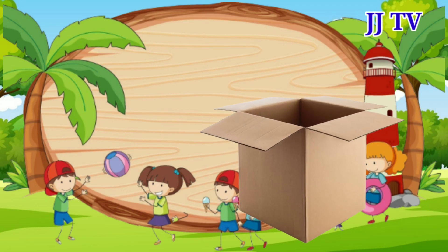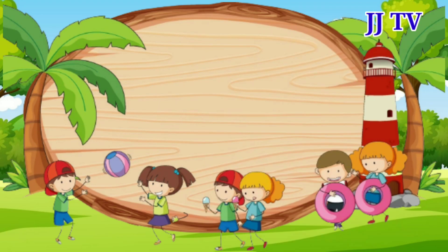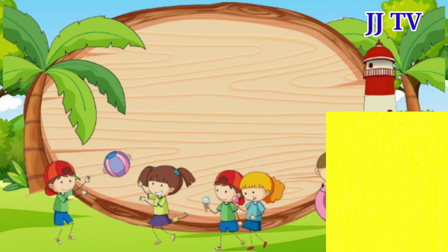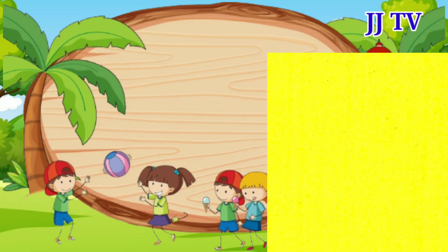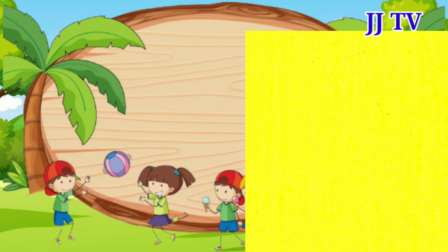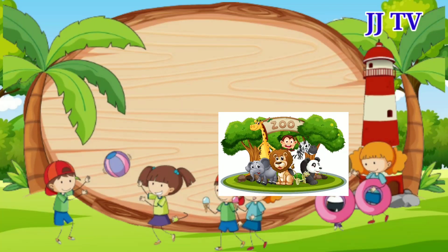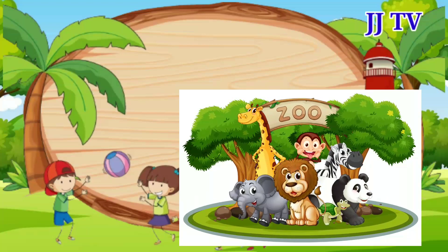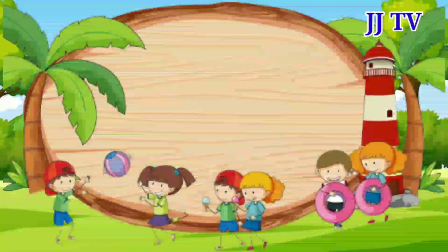W is for watch. X is for box, box, box. Y is for yellow, Y-Y-yellow, Y-Y-yellow, Y-Y-yellow. Z is for zoo, Z-Z-zoo, Z-Z-zoo, Z-Z-zoo.